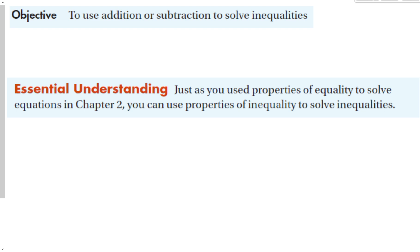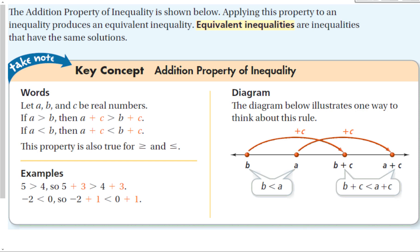Our essential understanding is that just like we used the properties of equalities to solve equations in Chapter 2, we are going to use the same properties of inequality to solve these inequalities. The addition property of inequality is shown below. Applying this property to an inequality produces an equivalent inequality. Equivalent inequalities are inequalities that have the same solutions.